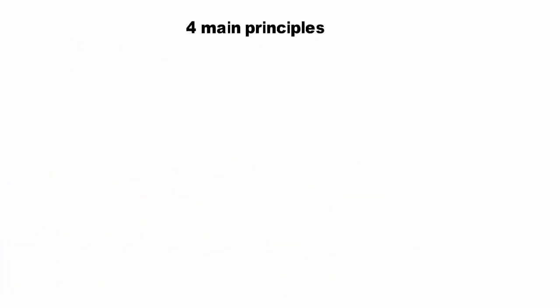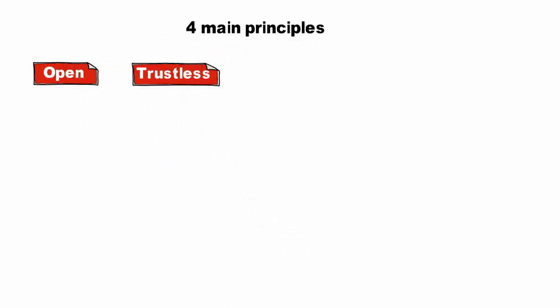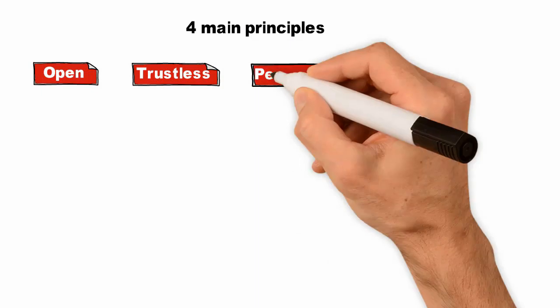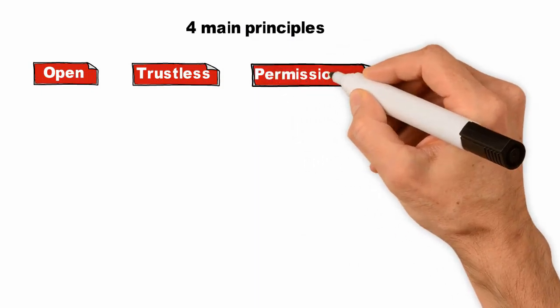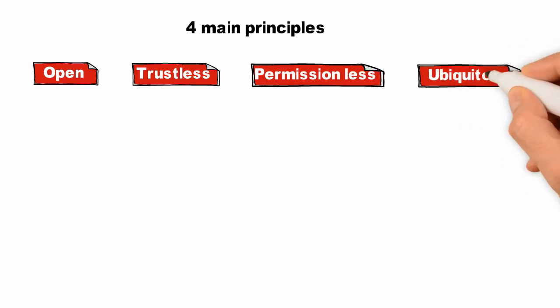Web 3.0 is still a work in progress, however it is expected to be implemented with four main principles: open, meaning it's open source and in full view of the public; trustless, meaning interacting without an intermediary; permissionless, meaning anyone can engage without permission from controlling organizations; and ubiquitous, meaning internet for all.